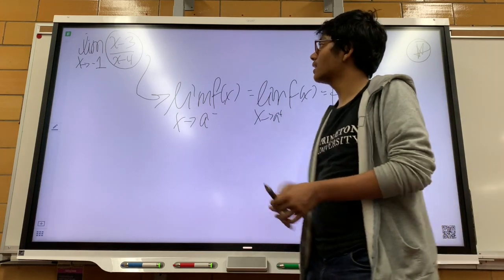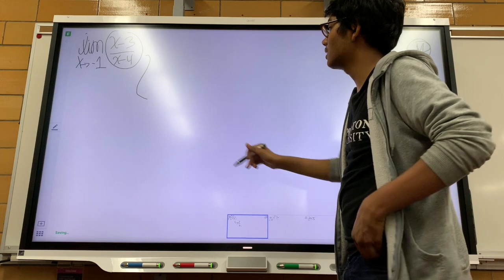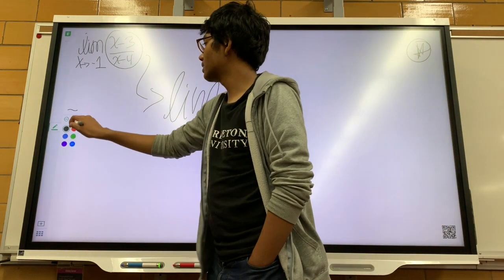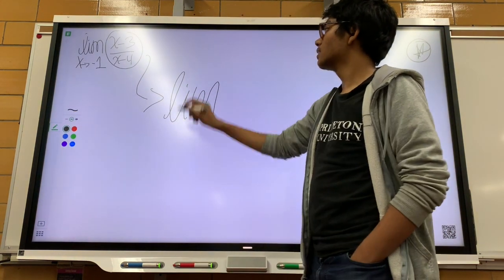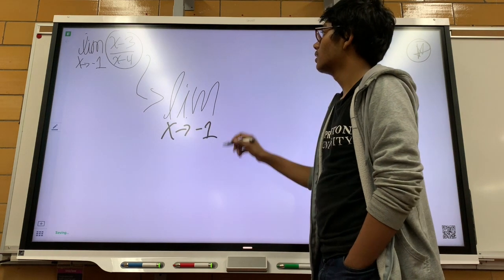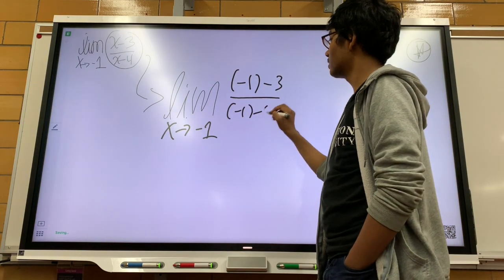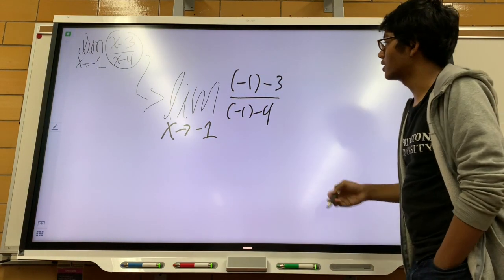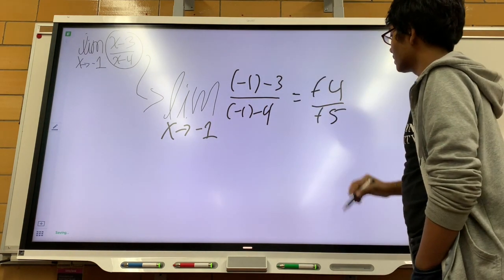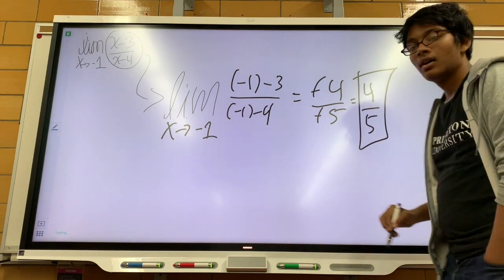And this function satisfies that definition. If you just plug in negative 1 right here, you'll see that we get a valid result. And let's do that. So it becomes the limit as x approaches negative 1 of negative 1 minus 3 over negative 1 times 4. So all I did was just substitute negative 1 for x right there. And that becomes negative 4 over negative 5. Negative negative cancels out, and so my final answer is just 4 over 5.